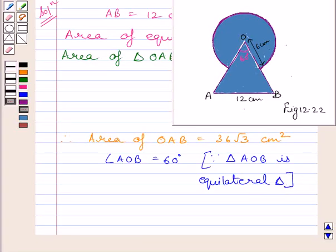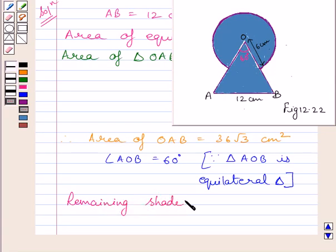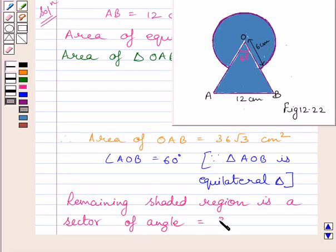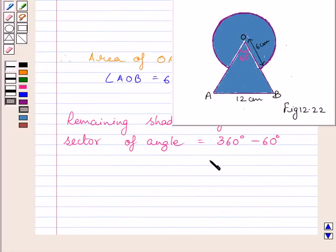Now clearly we can see, the remaining shaded region is a sector of angle 360 degrees minus 60 degrees minus 60 degrees minus 60 degrees. So we get this angle is equal to 300 degrees.